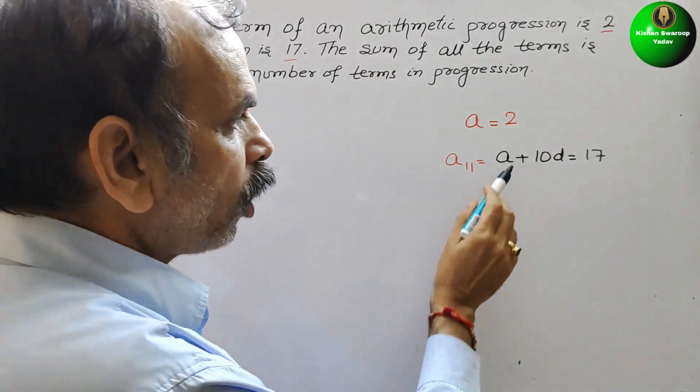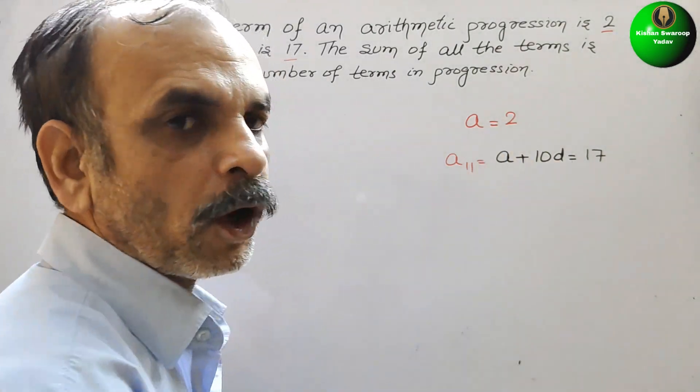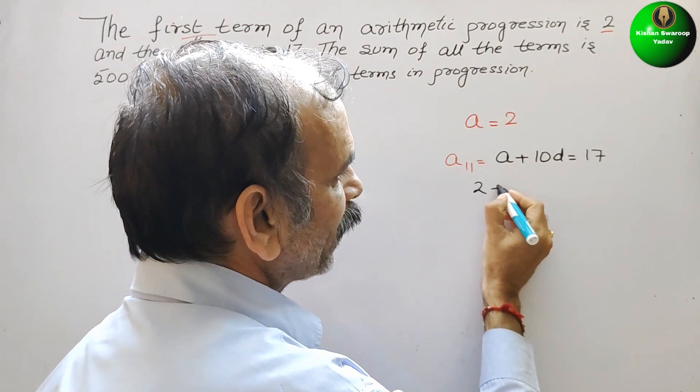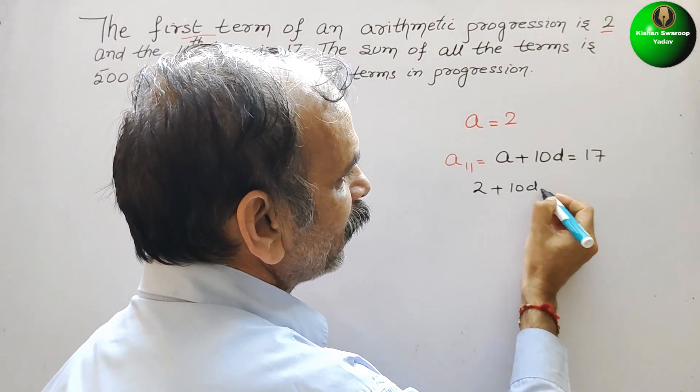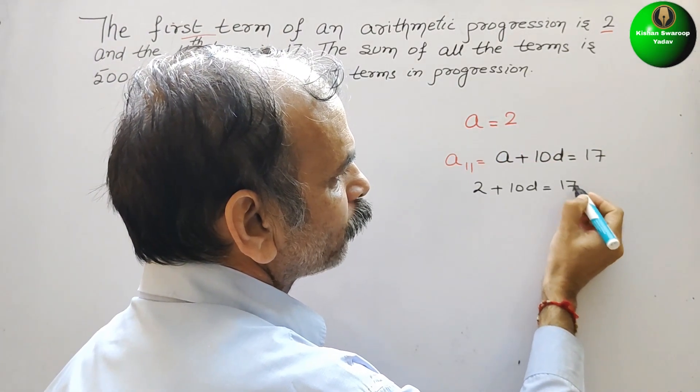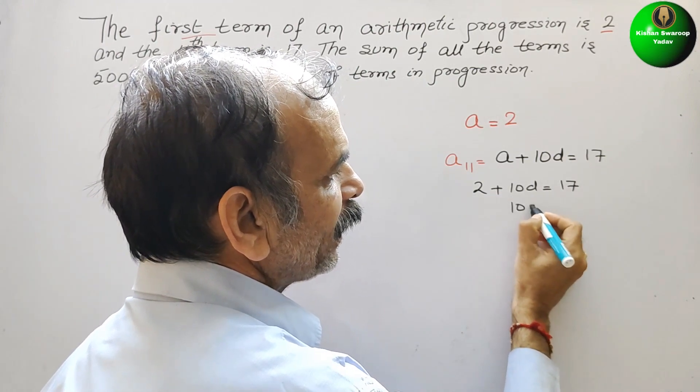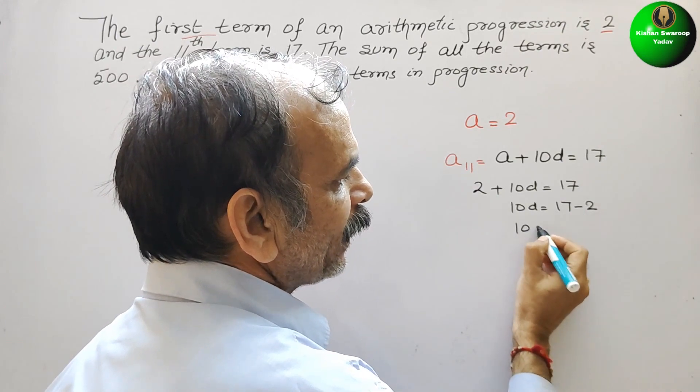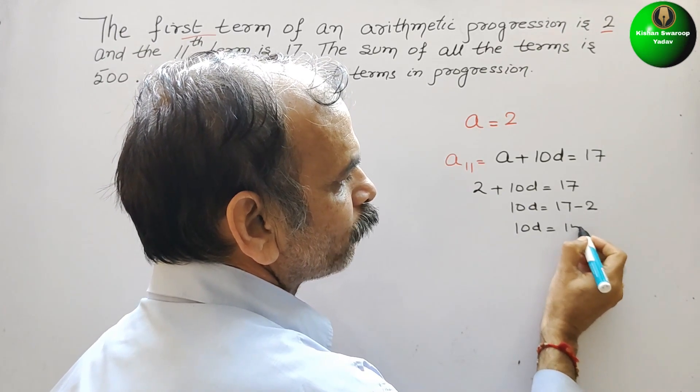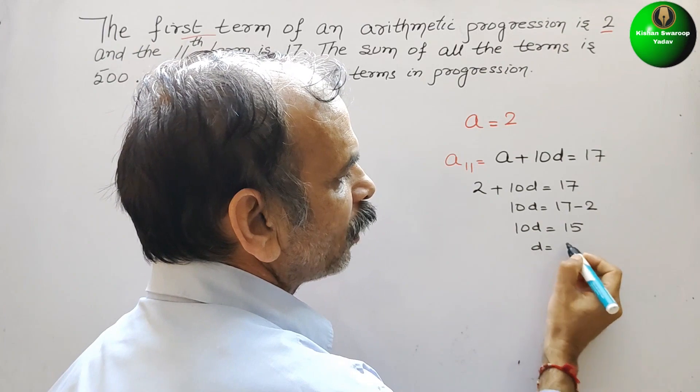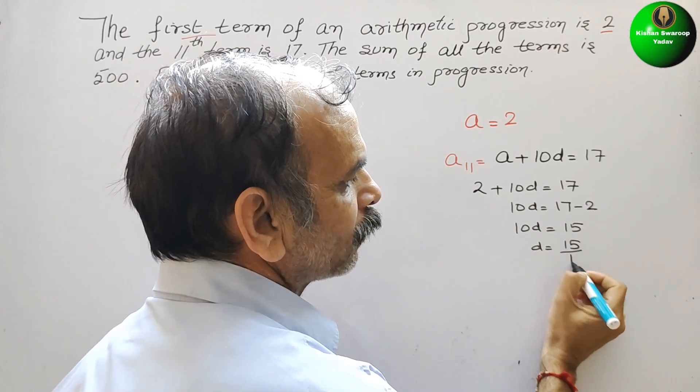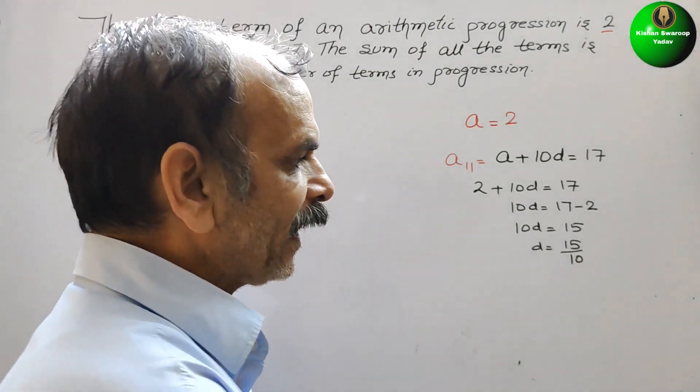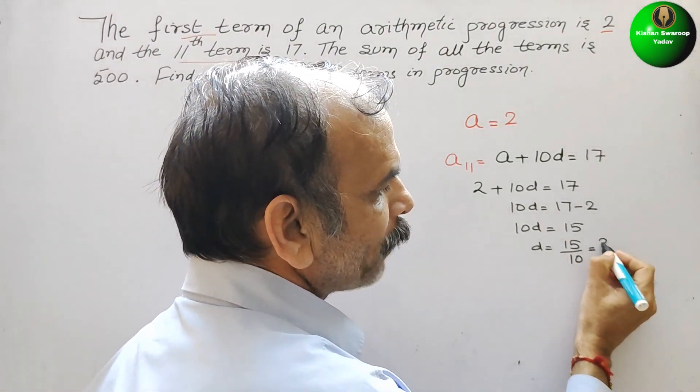Now, if you solve this, what we will get? Here a is 2 plus 10d is equal to 17. So we can say 10d is equal to 17 minus 2, 10d is equal to 15. So therefore d is equal to 15 by 10. If you reduce it, we will get 3 by 2.